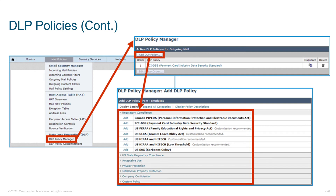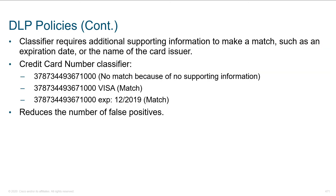Under mail policies you'll find the DLP policy manager. Kicking that off brings you to the screen from which you can add DLP policies, with prebuilt rule sets to help you get started. When leveraging classifiers, remember they require additional supporting information to make a match — such as an expiration date or the name of a card issuer. So just finding 16 digits alone may not match if we don't find the supporting information.